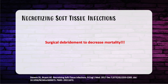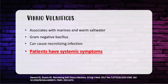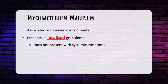Two commonly tested infections: Vibrio vulnificus versus Mycobacterium marinum. Big picture — Vibrio makes you really sick; Mycobacterium is a localized granuloma skin condition. Vibrio vulnificus is associated with marines and warm salt water — think Florida. It's a gram-negative bacillus that can cause necrotizing infection and, importantly, hemorrhagic bullae. These patients are really sick with systemic symptoms. Mycobacterium marinum is also associated with watery environments like marine and aquarium settings, but you see only localized granuloma with no systemic symptoms — patients show up after noticing a lesion for a while that isn't necessarily painful.